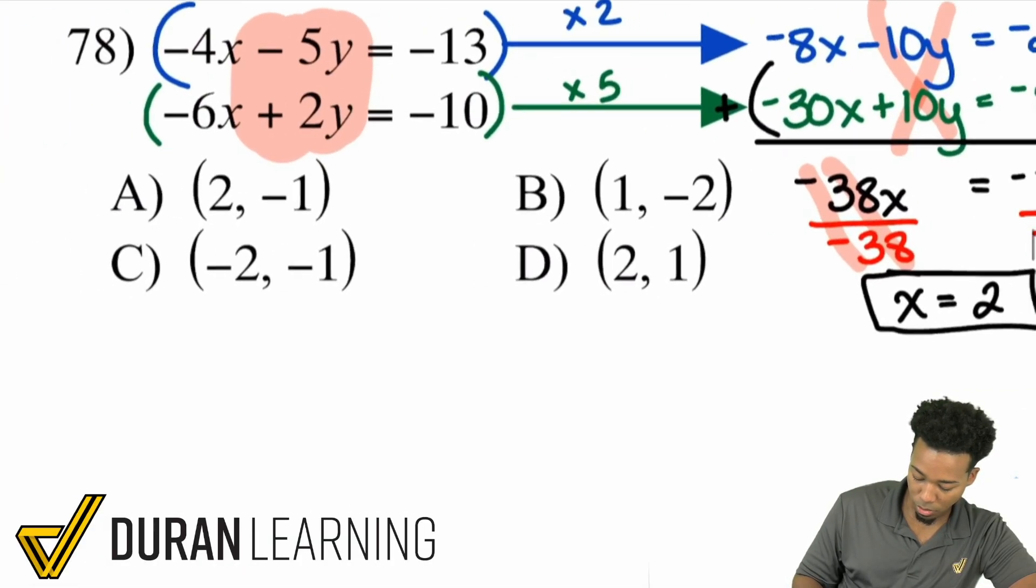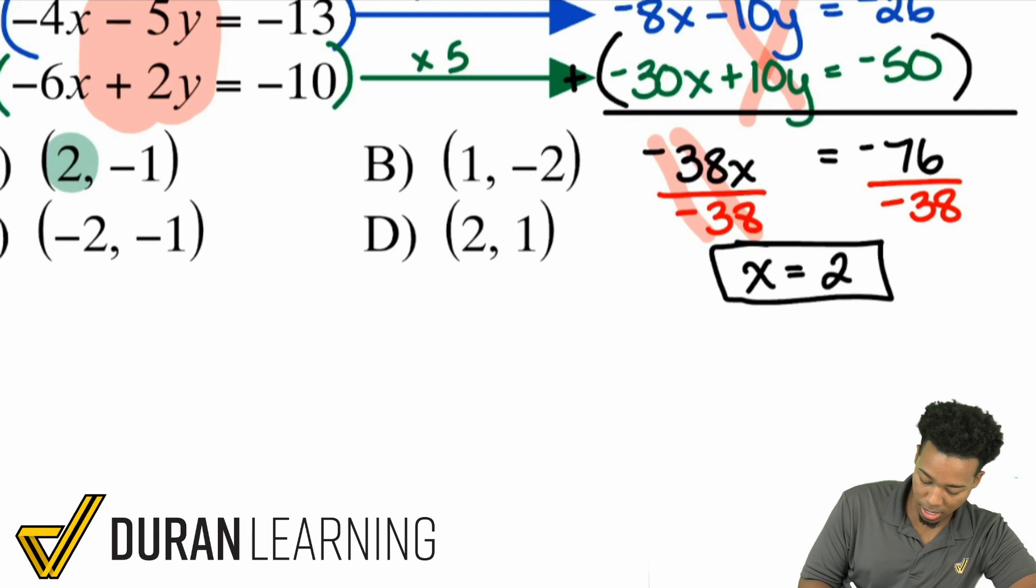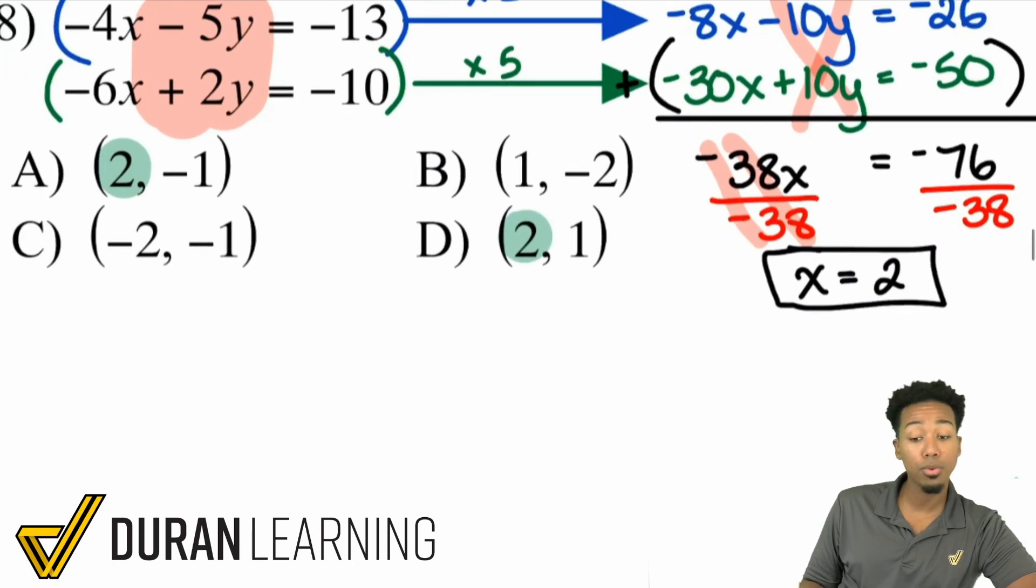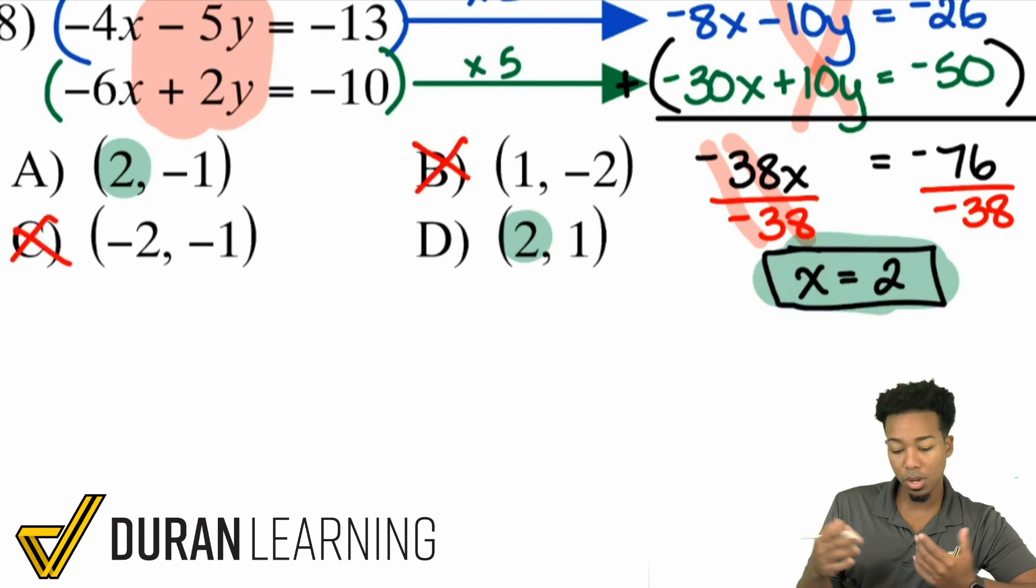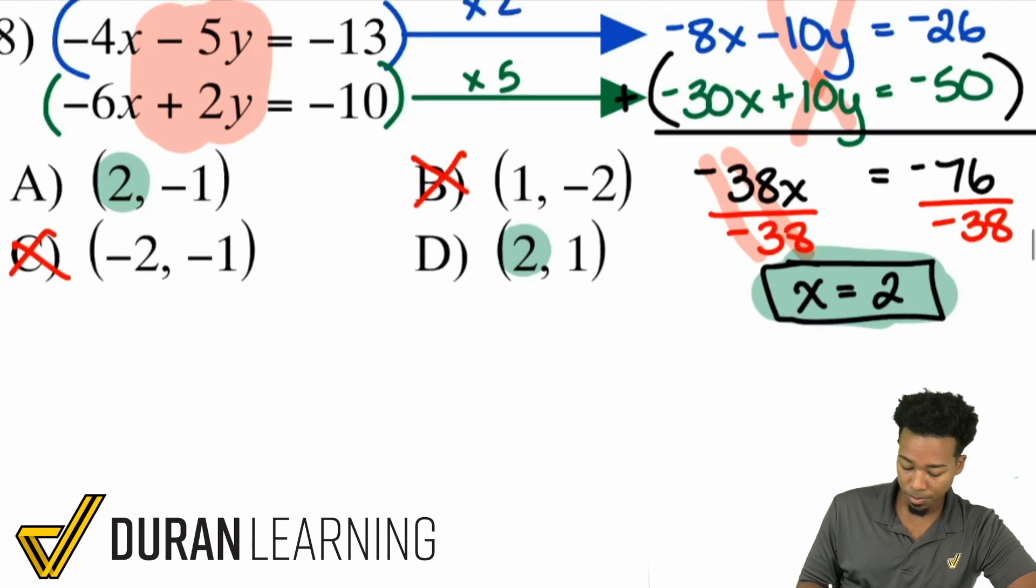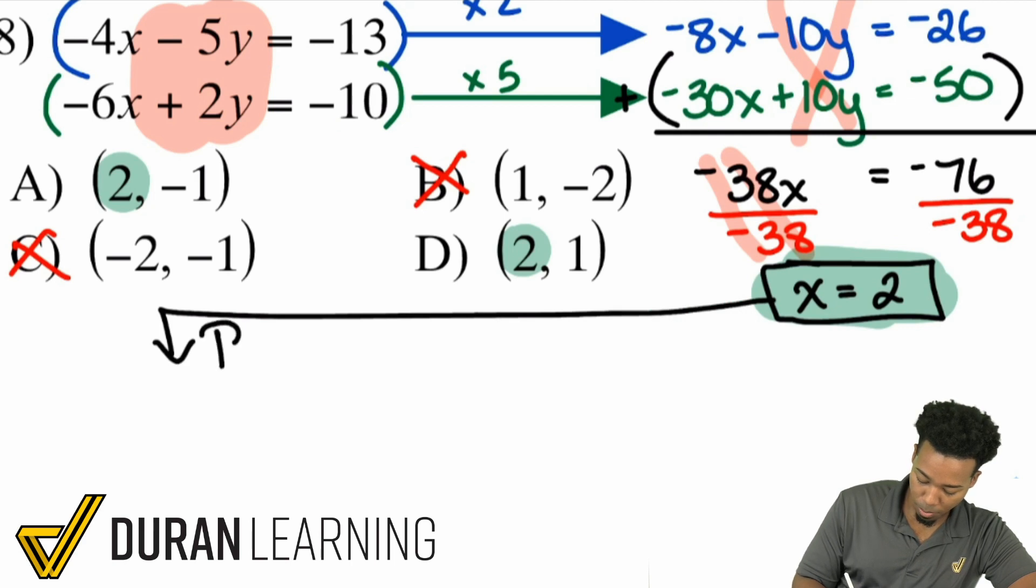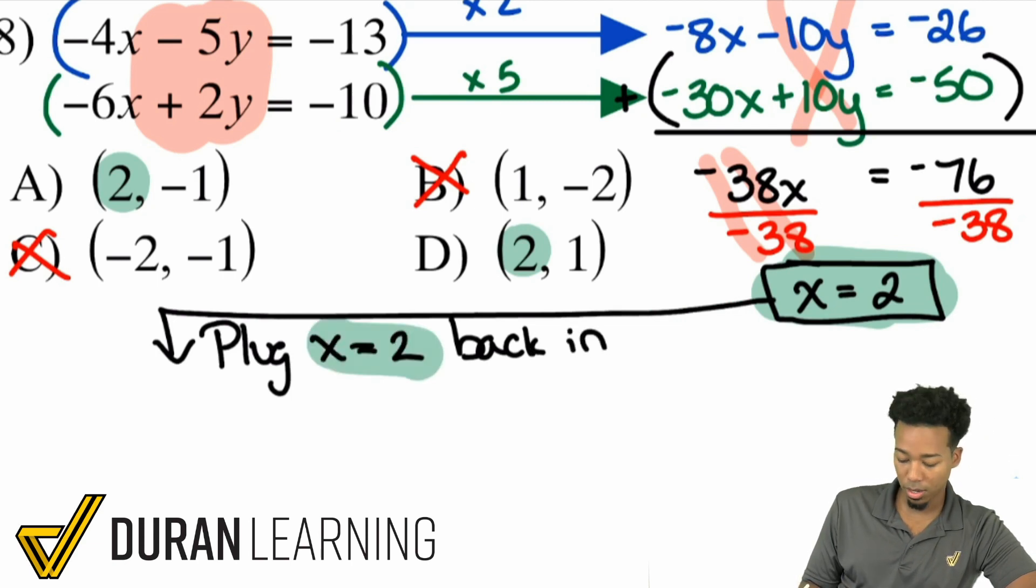Booyah! Do we have any more work to do? Yeah, we do. Because we see that A and D are both using positive 2 for x. So, I have more work to do. I'm going to need to go ahead and plug the 2 back in, so I can figure out whether the negative 1 or positive 1 is the y. Sounds good. You can take any of the equations and do that. Plug back in.